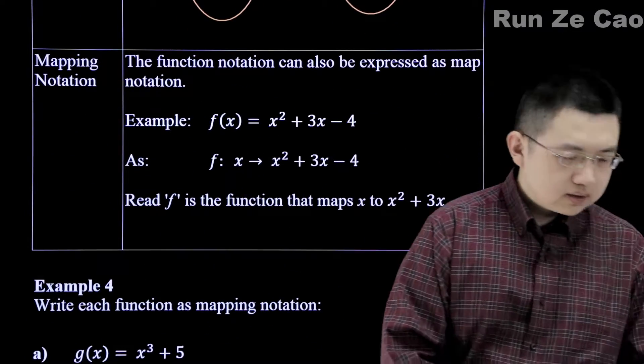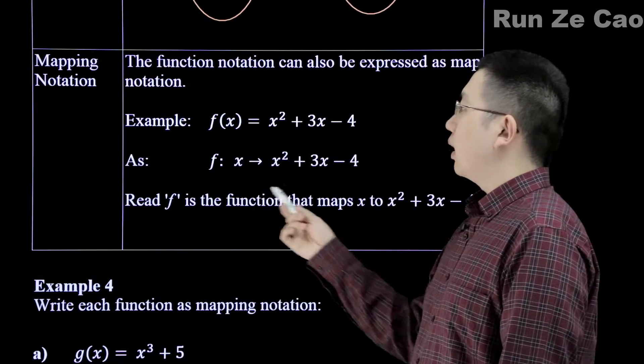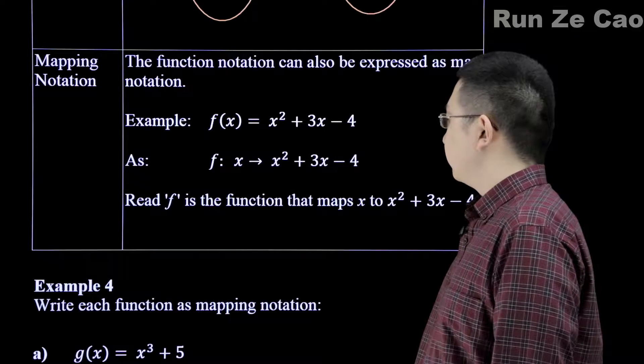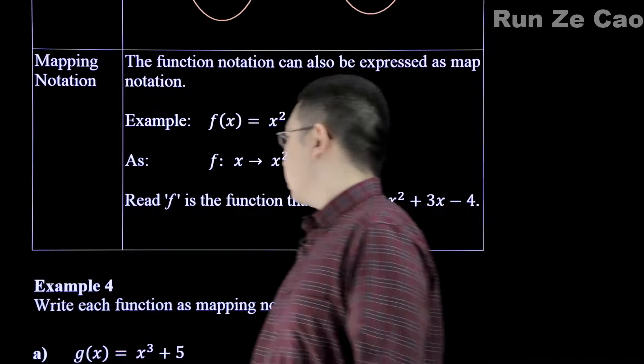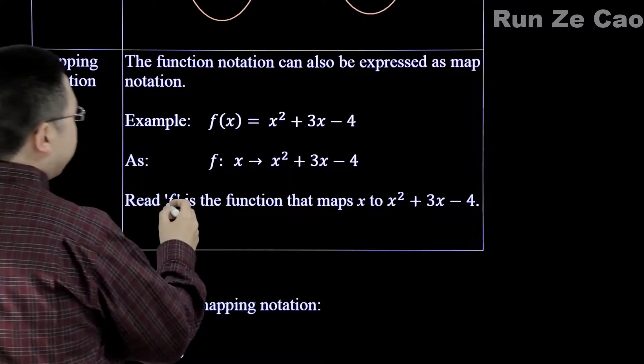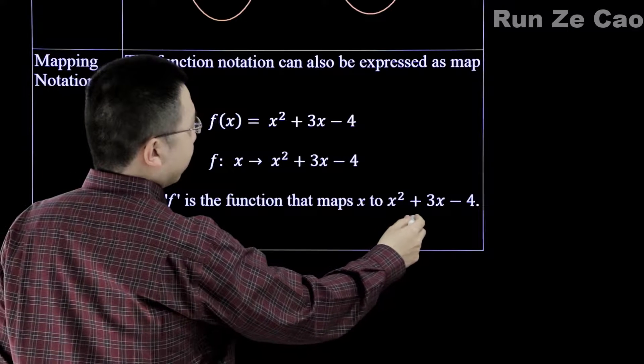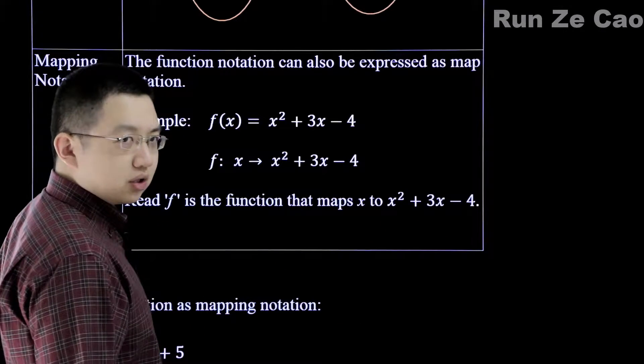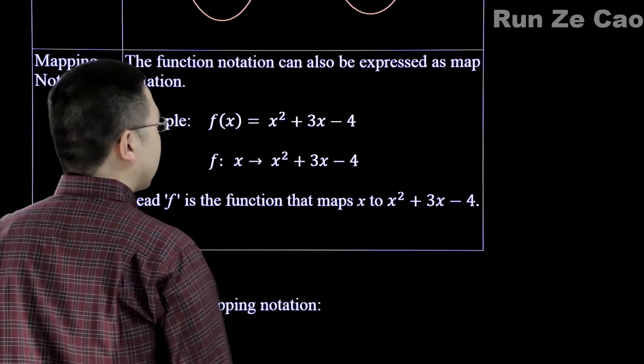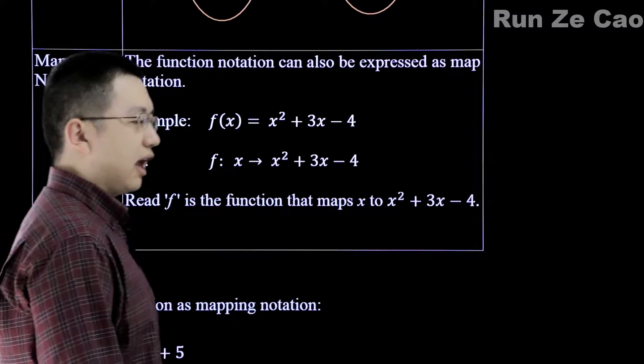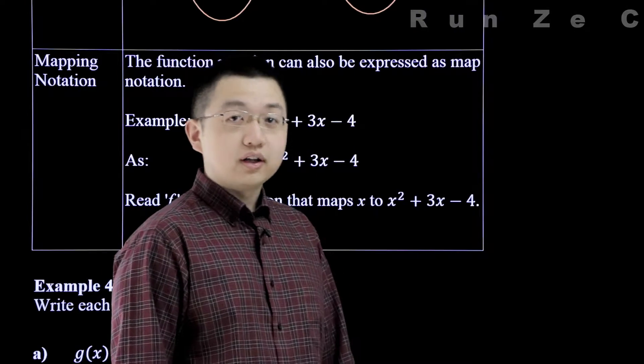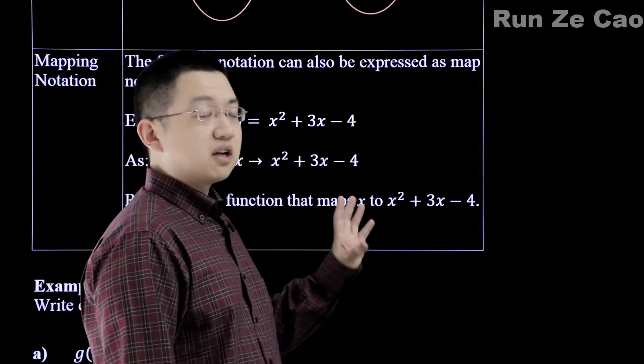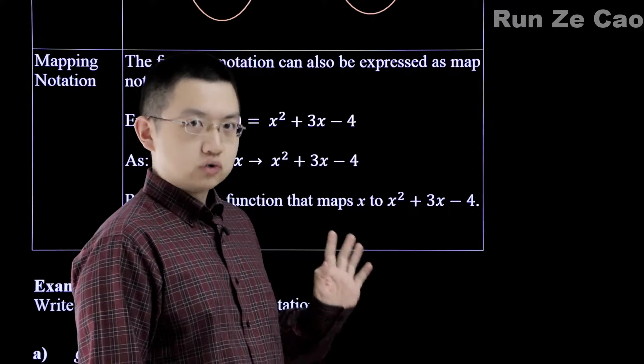However, if you have one value in the domain having multiple values in the range, then it is not a function. So this is one way to write functions in mapping notation. And this is how you read it. f is a function that maps x to x squared plus 3x minus 4.